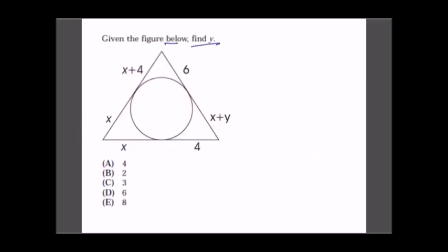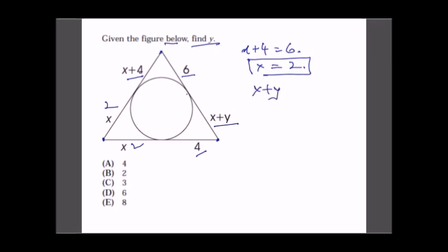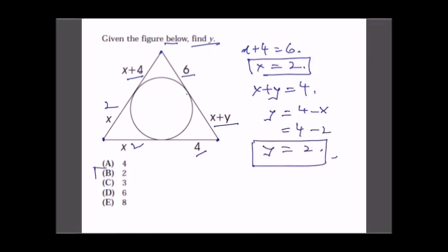Given a figure, find Y. Two tangents from an external point to a circle are equal. One tangent segment is x + 4 and the other is 6, so x + 4 = 6, giving x = 2. The other pair gives x + y = 4, so y = 4 − 2 = 2. The answer is Y = 2, choice B.